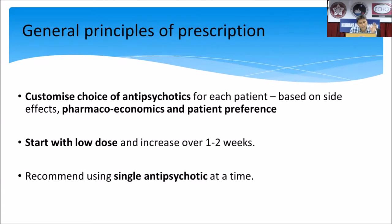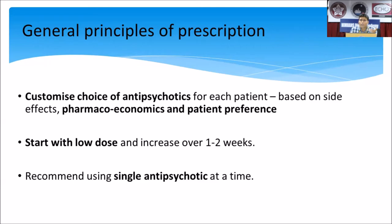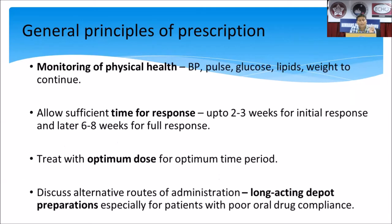When prescribing antipsychotics, we need to follow some general rules. The choice of antipsychotic, like the choice of antidepressants, is based on the patient's preference, considering the side effect profile, availability, accessibility, and cost. It is usually started at a low dose and gradually increased. Importantly, it is recommended to use a single antipsychotic at a time, because combining antipsychotics generally increases side effects. Only in treatment-resistant cases is a combination of antipsychotics done.